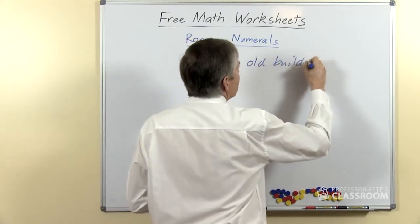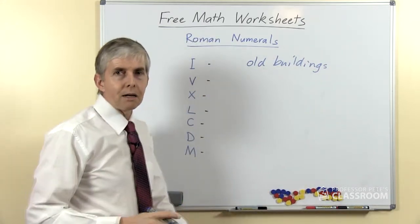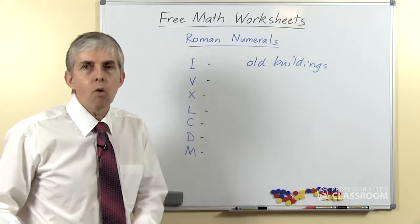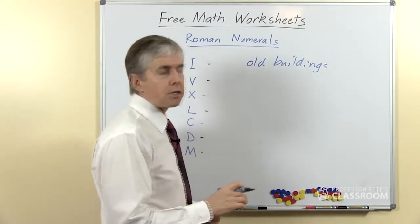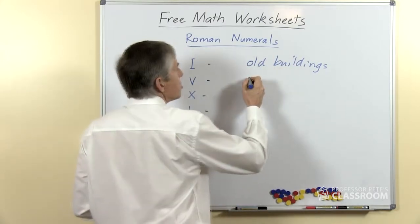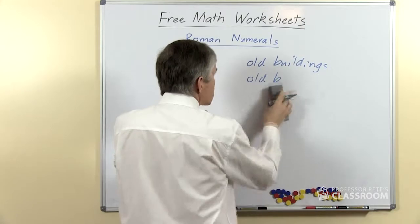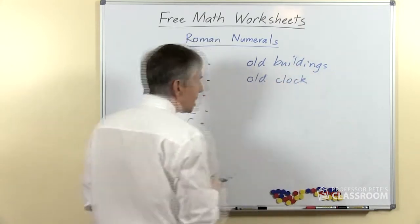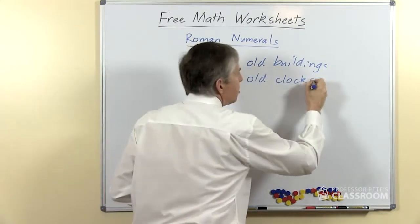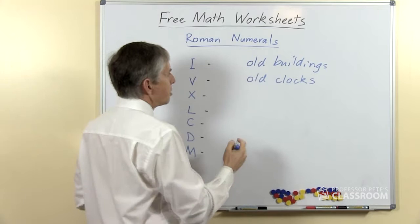It depends a little bit on where you live, but there may be old buildings, old government buildings like city hall, old churches and so on that quite often have Roman numerals on them. Old clocks, even modern clocks sometimes, have Roman numerals instead of the normal numerals we use all the time.